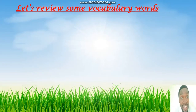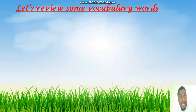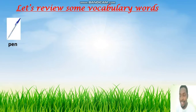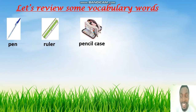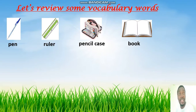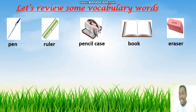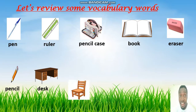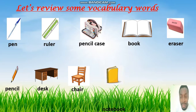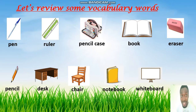Did you enjoy this song? Now let's review some vocabulary words. I think you know them, right? Come on, let's review again. Number one is pen. It's a pen. It's a ruler. It's a pencil case. It's a book. It's an eraser. It's a pencil. It's a desk. It's a chair. It's a notebook. It's a whiteboard. Let me hope you do remember those vocabularies about school things. See you in the next slide.